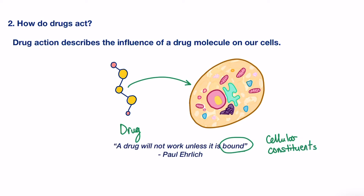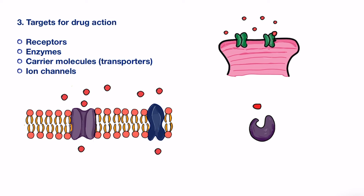So what are these cellular constituents we're talking about? These are the direct targets, which are most of the time proteins. However, some drugs also bind to other molecules such as anti-tumor drugs that treat different types of cancer, which interact directly with DNA rather than protein.